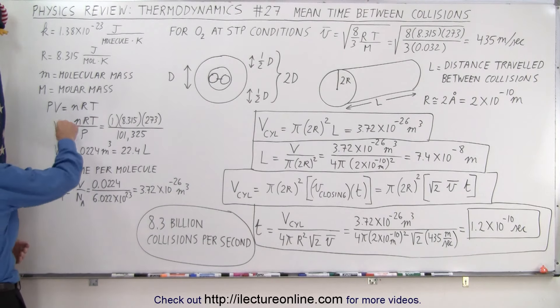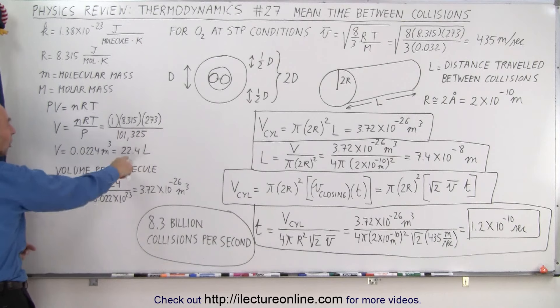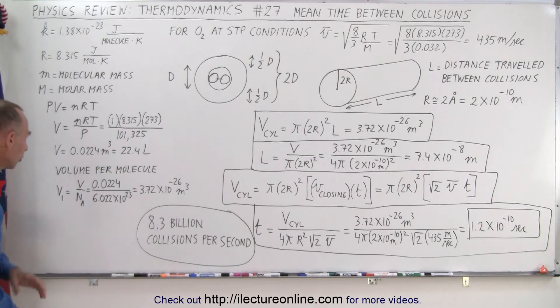So here quickly, using the PV equals NRT equation, we figured out that the volume of a mole of molecules at STP conditions is 22.4 liters or in cubic meters right here.